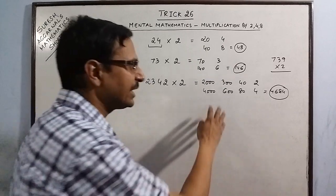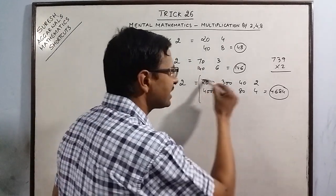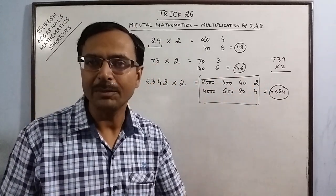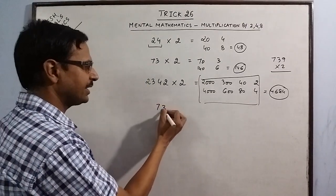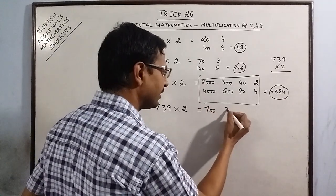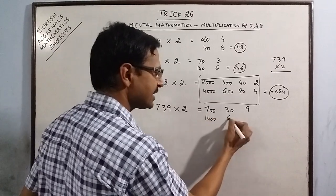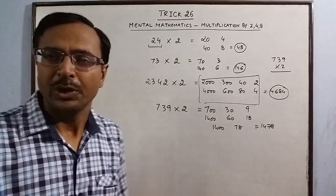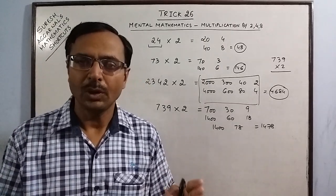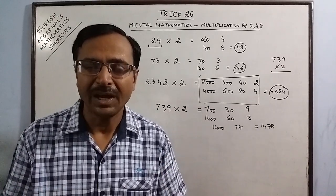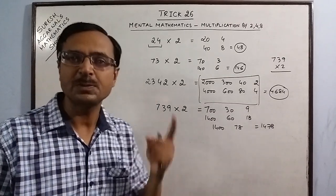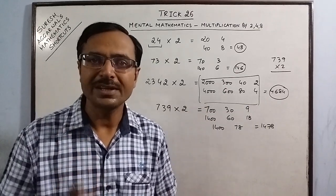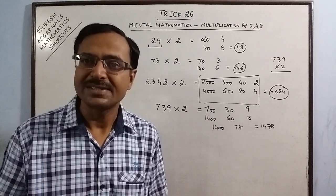Mental mathematics is done in the mind and you arrive at the answer directly just by speaking the number in the right manner. Another example: 739 multiplied by 2. Call it '7...39,' double it — 14...78. 60 and 18 gives 78, so the answer is 1478. Don't multiply by 2; just double. When you speak the numbers, give a pause so that you know the meaning of what is being done — multiplying by 2 is simply doubling.